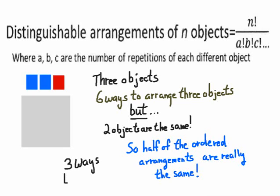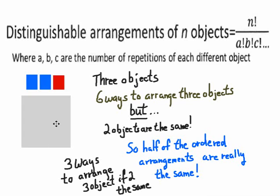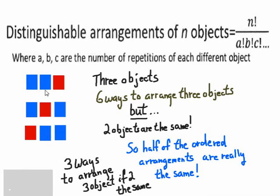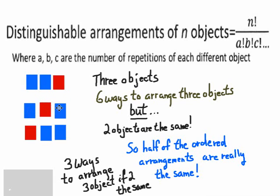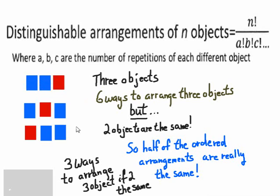So you can't really say there's six ways to do it. There's only three ways to arrange those things, because two are the same. It turns out there's three ways to arrange three objects if two are the same. You could have blue, blue, red. Or you could have blue, red, blue. Or red, blue, blue. It doesn't matter if you swap the two blues around, because it doesn't look any different. So we had to divide by two.